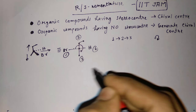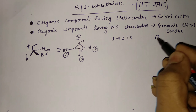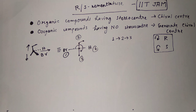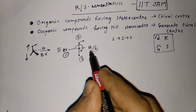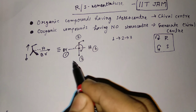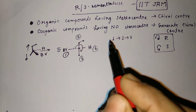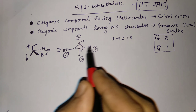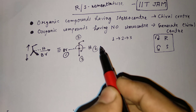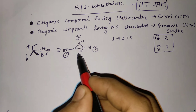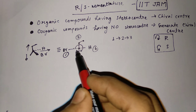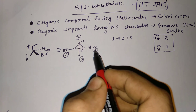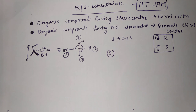Generally, if it is clockwise it should be R, and if it is anticlockwise it should be S. But there is a condition. After determining clockwise or anticlockwise rotation, you need to look at the hydrogen atom — the 4th or lowest priority atom. If the lowest priority atom is on the horizontal line, the nomenclature will be opposite to what actually comes out. Here we get clockwise rotation, which should be R, but as the lowest priority hydrogen atom is on the horizontal line, it should be S.